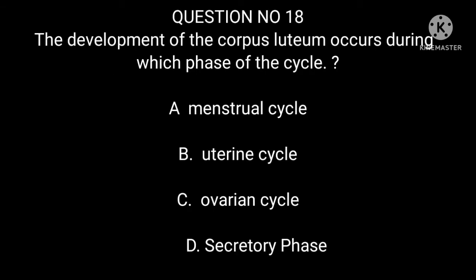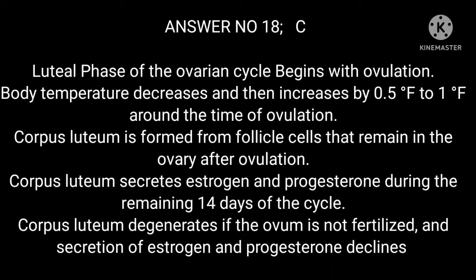Question number 18. The development of the corpus luteum occurs during which phase of the cycle? A. Menstrual cycle. B. Uterine cycle. C. Ovarian cycle. D. Secretory phase. Answer number 18: C. The luteal phase of the ovarian cycle begins with ovulation. Body temperature decreases and then increases by 0.5°F to 1°F around the time of ovulation. The corpus luteum is formed from follicle cells that remain in the ovary after ovulation and secretes estrogen and progesterone during the remaining 14 days of the cycle. The corpus luteum degenerates if the ovum is not fertilized.